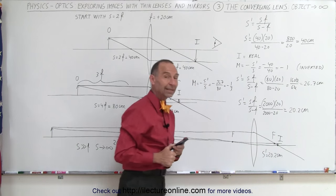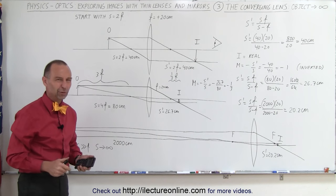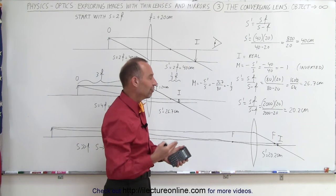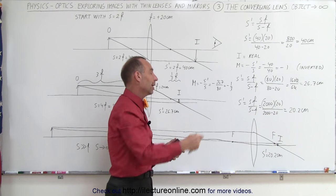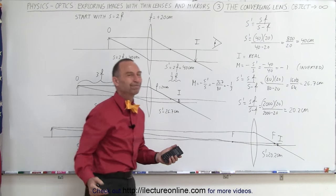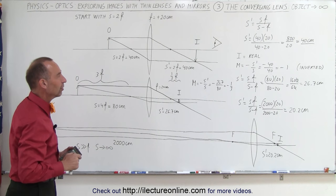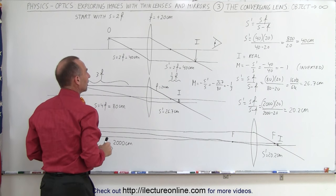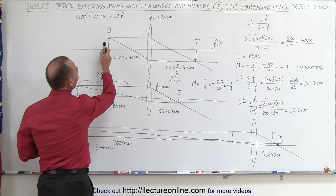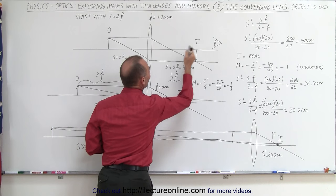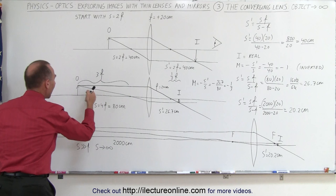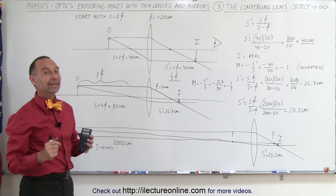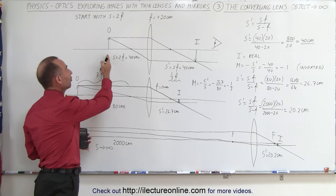What happens when you move the object all the way to infinity? Of course there's no such thing as infinity in real life, but as the object goes far, far away, the image will approach extremely close to the focal point. In the limit, if you place the object infinitely far away, the image would appear at the focal point itself. So starting with the object at twice the focal length — where the image is also twice the focal length away — as the object moves farther away, the image moves closer and closer until it reaches the focal point.